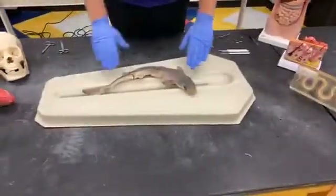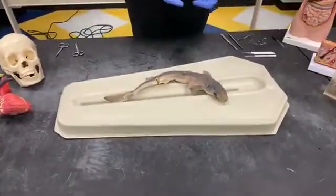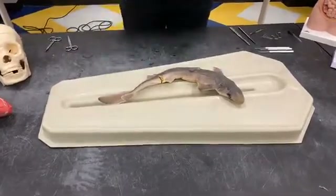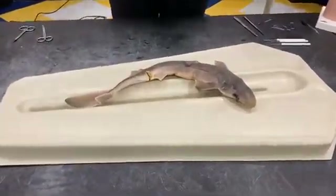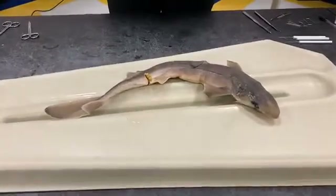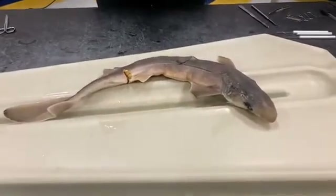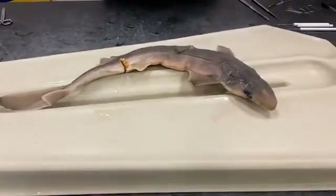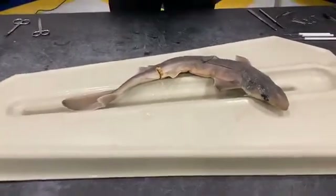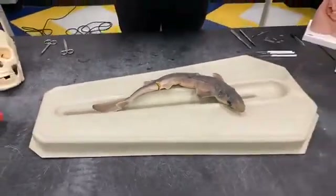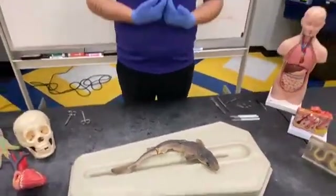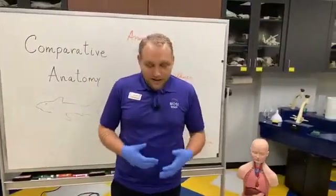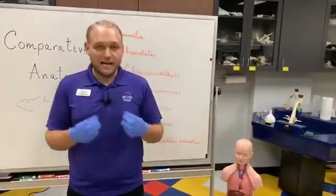We're going to observe and learn some things you see right on the outside. Sharks kind of look like they have skin, but all fish in the ocean have scales. Yes, sharks have scales even though it looks like skin. They are called dermal denticles. Breaking that word down: dermal means skin, denta means teeth. So they have skin teeth, or teeth scales. Their scales look like very tiny teeth.